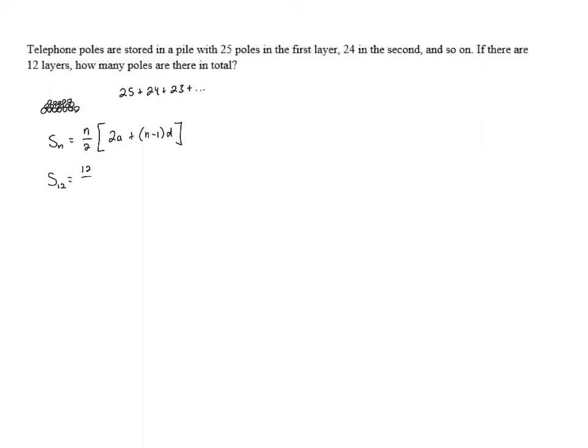This is going to give us 12 over 2 times the quantity 2 times 25 because we know that there were 25 poles in the first layer. So the first term is 25 and then plus n minus 1, so 12 minus 1 times the common difference, which in this case is negative 1. If we take the difference of subsequent terms, 24 minus 25 is negative 1, 23 minus 24 is negative 1. So the common difference here is negative 1.